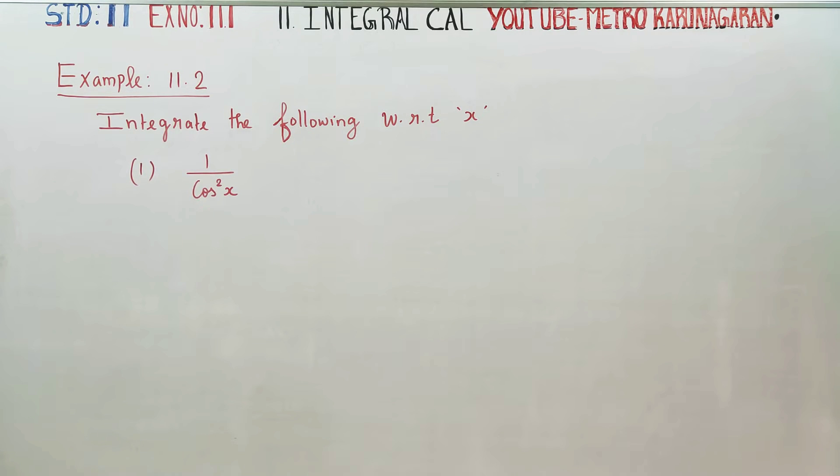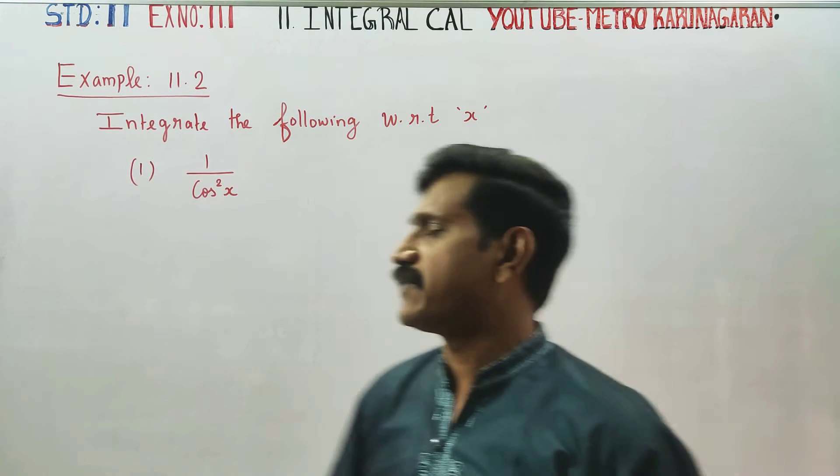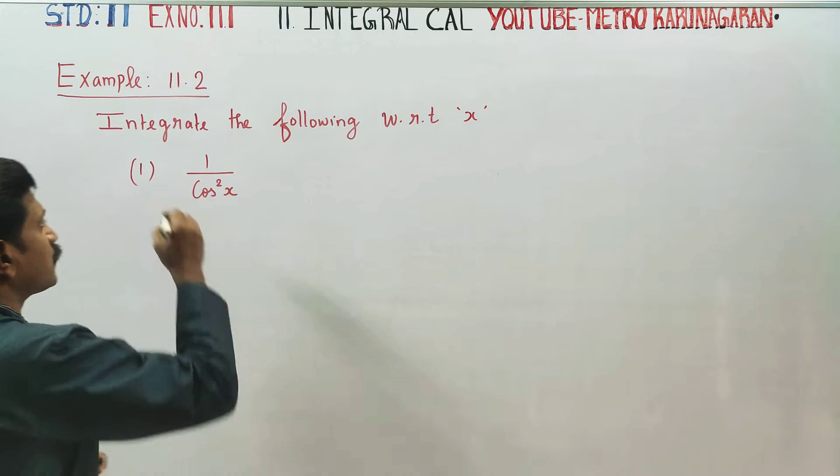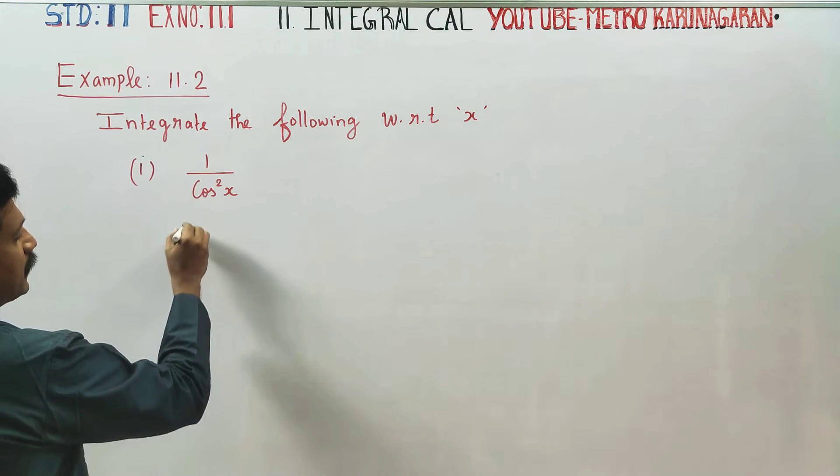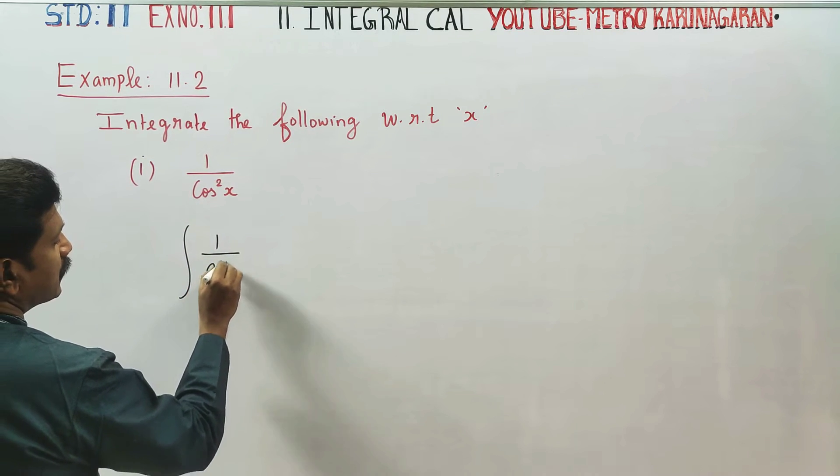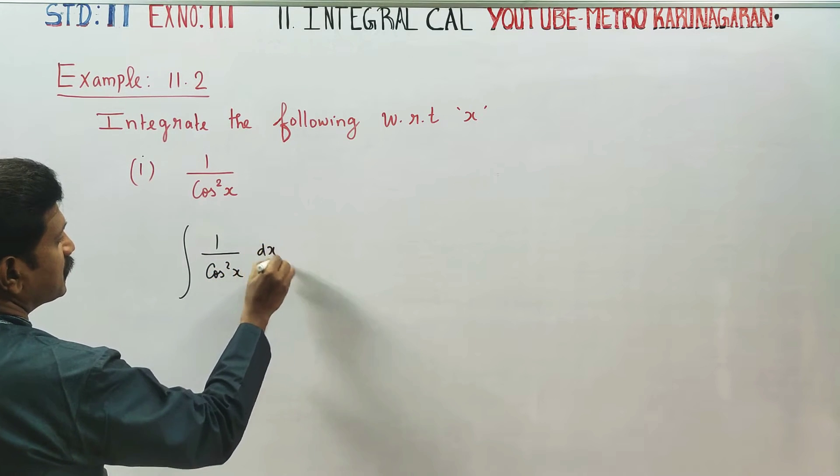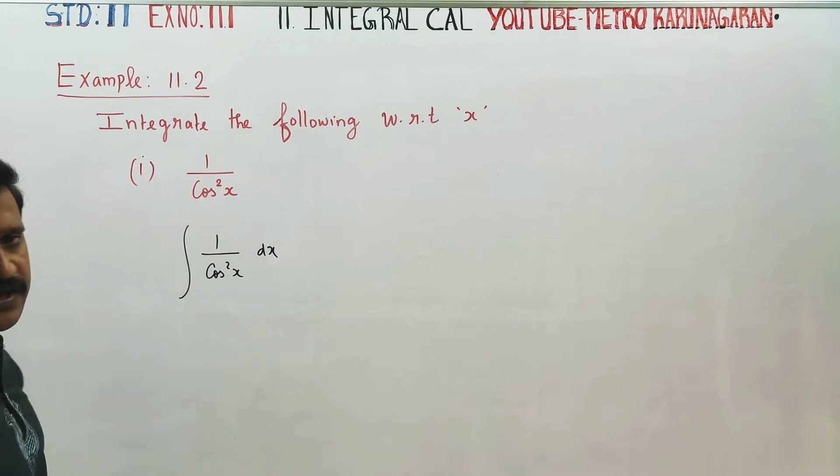Dear 11 standard students, in example 11.2, you have to integrate the following with respect to x. Hello, first is 1 by cos square x. Integration of 1 by cos square x dx. The integration symbol is called the dx operator.